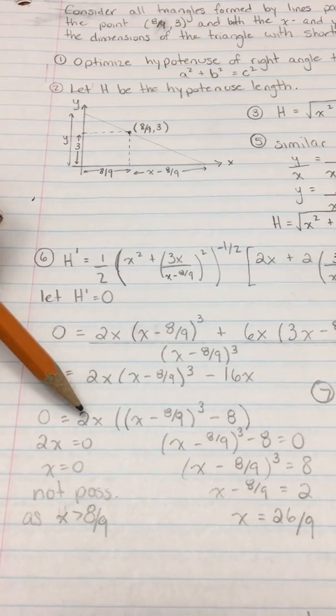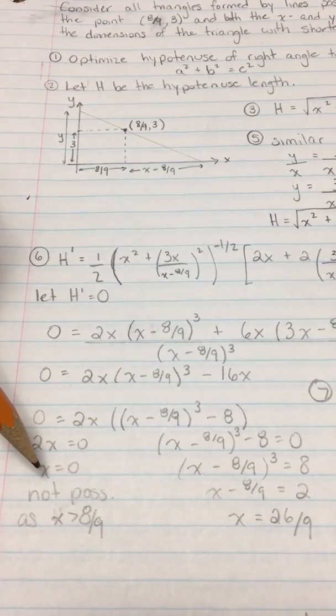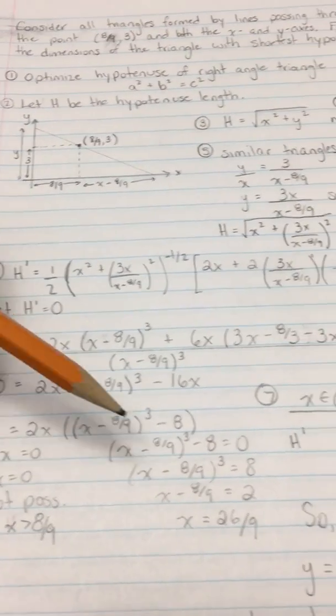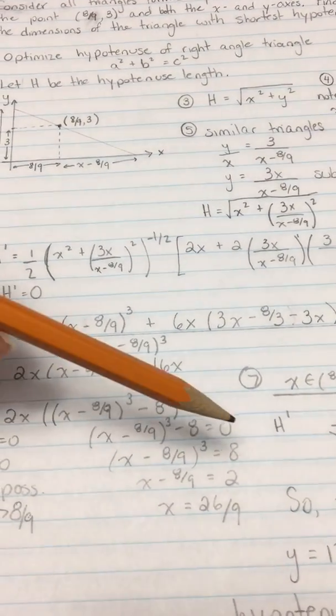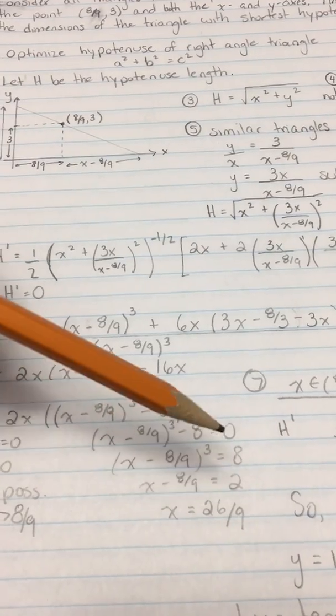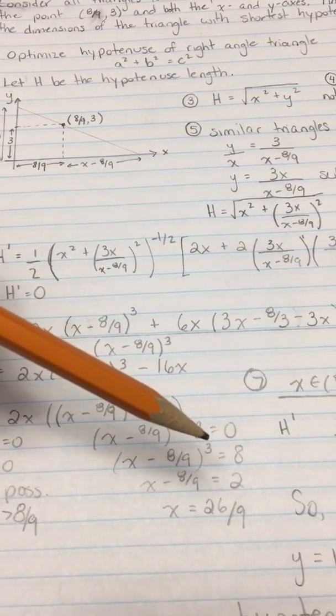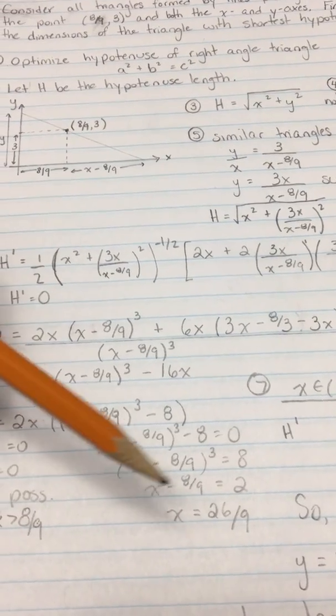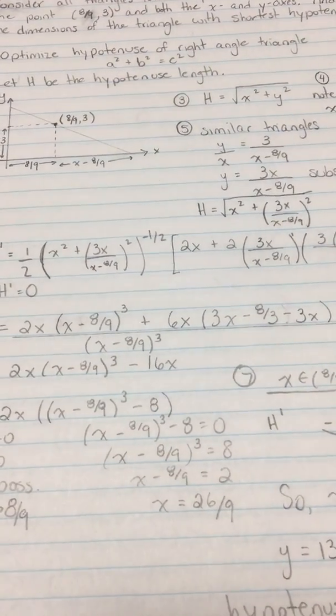If we set 2x equal to zero we get x = 0, which is not possible because we know it has to be larger than 8/9. If we solve the other equation we get (x - 8/9)³ = 8. If we cube root the 8 we get 2, solve for x we get 26/9.